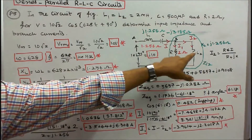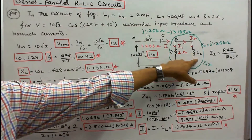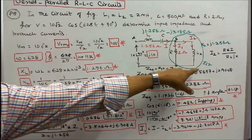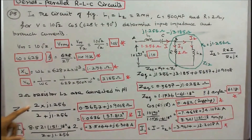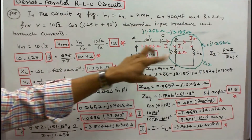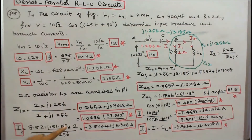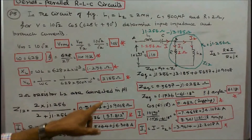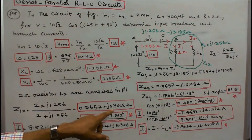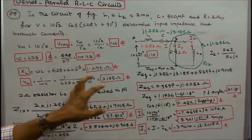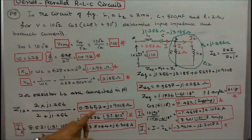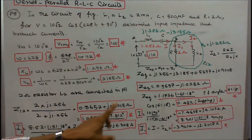The resistor R and L2 are connected in parallel. Let the equivalent impedance be Z12 = R·(jXL2) / (R + jXL2) = 0.5657 + j0.9008 ohms in rectangular form, or 1.0636∠57.812° in polar form.